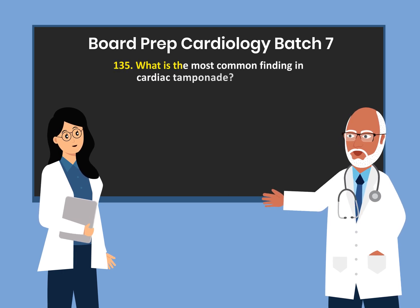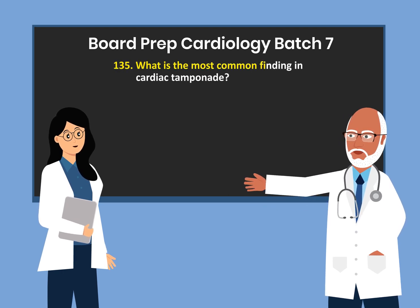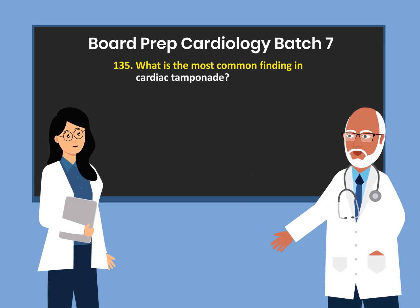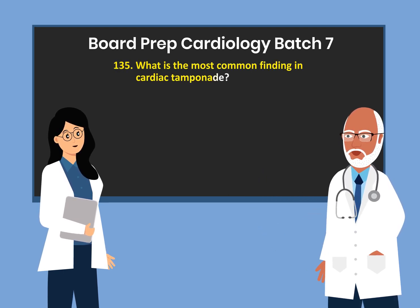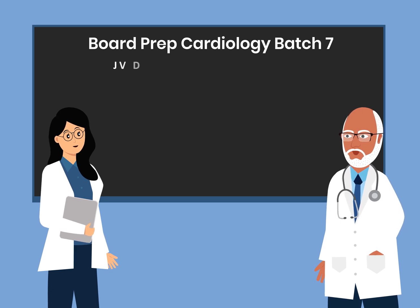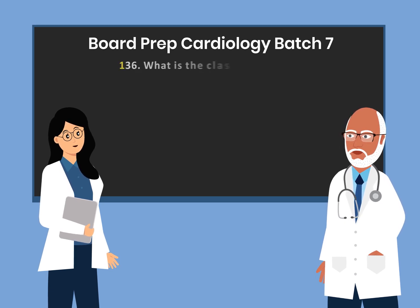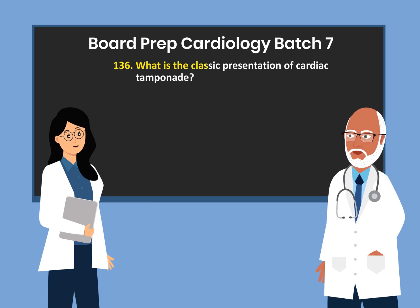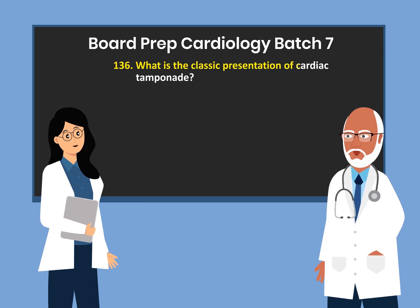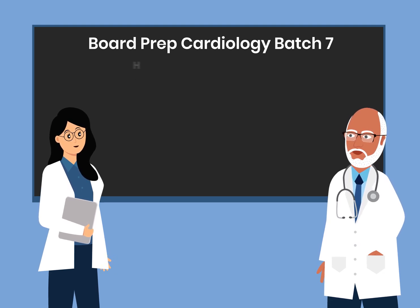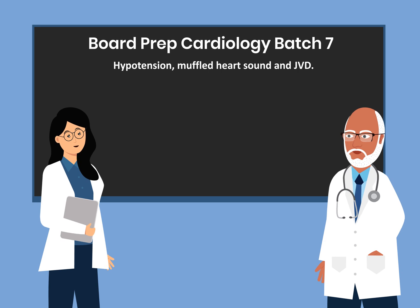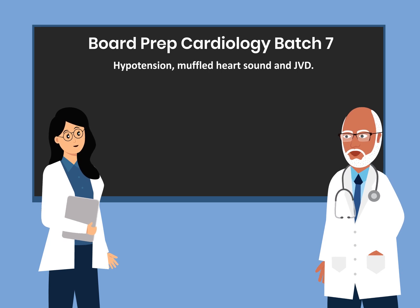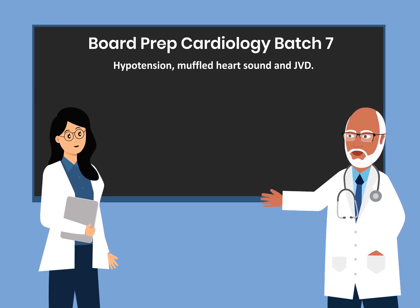Question 135. What is the most common finding in cardiac tamponade? Jugular vein distension. Question 136. What is the classic presentation of cardiac tamponade? Hypotension, muffled heart sound, and jugular vein distension.